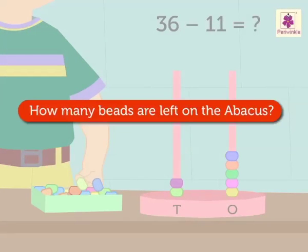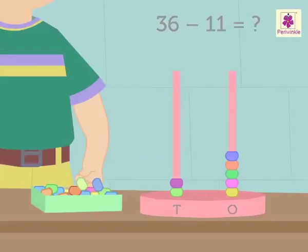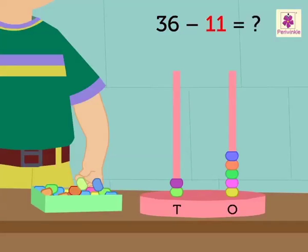Look, how many beads are left on the abacus? Yes, correct. Two beads in tens rod and five beads in the ones rod, which is equal to two tens and five ones. That is twenty-five. Look, he got the answer. Thirty-six minus eleven is equal to twenty-five.